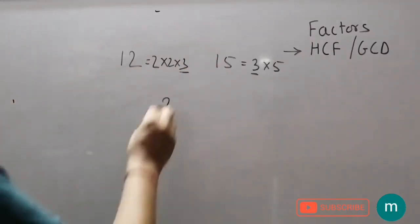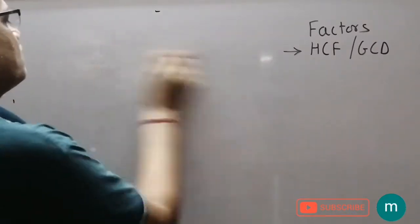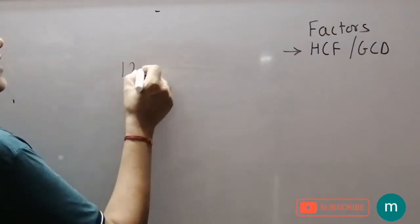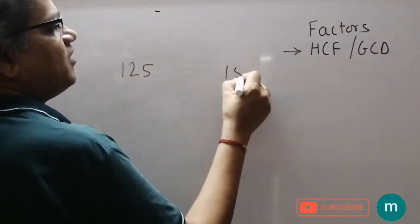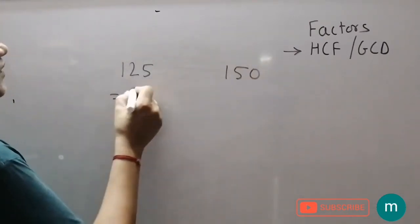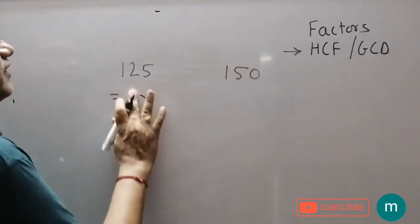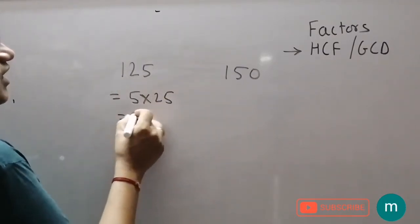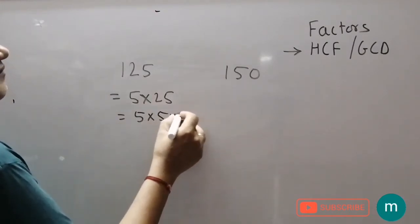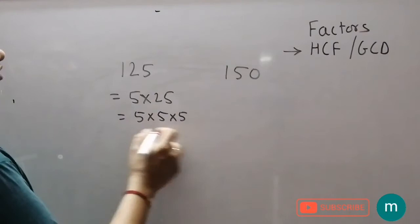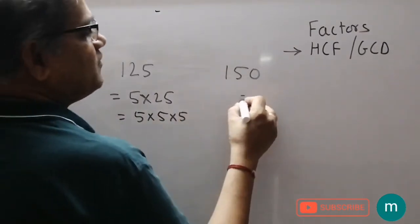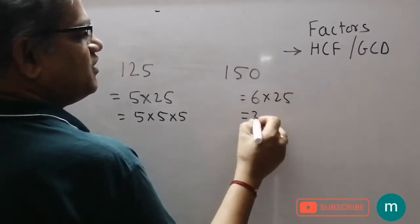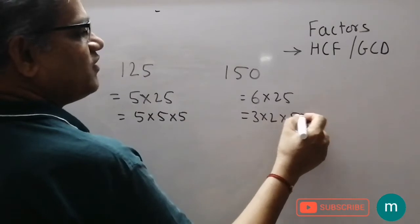Let's see 2-3 steps. The number is 125. The number is 150. Let's focus on the factors. The number 150 is 25 into 5, and 25 is 5 into 5. We have the highest common factor. So, 150 is 6 into 25, 6 is 3 into 2, and 5 is 5 into 5.